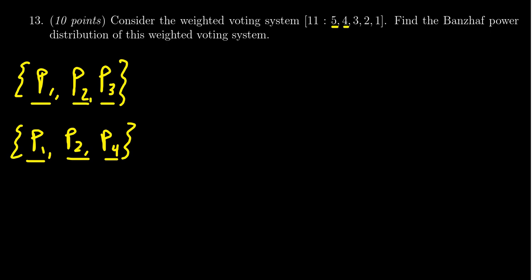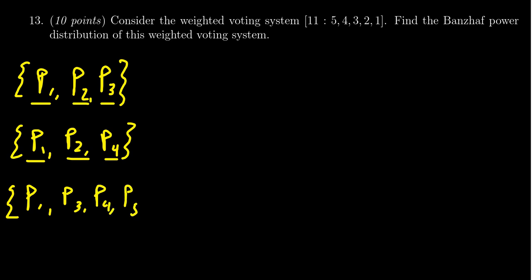If you did 5, 4, and just 1, that only gives you 10, so that's not quite good enough. You could also do 5, 3 — that gives you 8, plus 2 is 10, plus 1. So you could do the coalition with player 1, player 3, player 4, player 5. The exact count is 11, so that would be a winning coalition for which everyone is critical. Those are all the minimal winning coalitions that involve player 1.